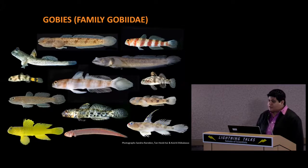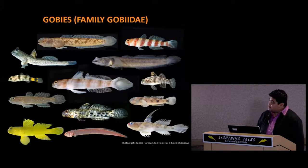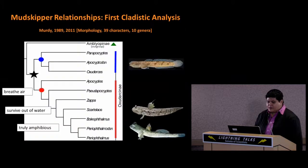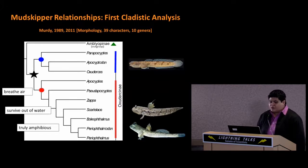There are about 50 species of mudskippers in Oxudercinae, and they belong to a really large family of fishes known as the gobies. Here are just some examples of representatives from this family.